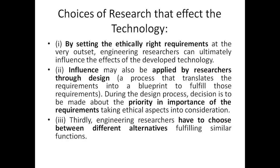The first choice of a researcher is setting the ethically right requirements. For your particular research, what are the ethical requirements that have to be set? By setting the ethically right requirements at the very outset, engineering researchers can ultimately influence the effects of the developed technology. The second thing is influence — this influence may also be applied by researchers through their designs, or through a process that translates requirements into blueprints to fulfill those requirements. During the design process, decisions are to be made about the priority and importance of requirements, taking ethical aspects into consideration.